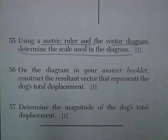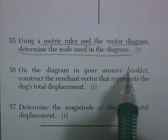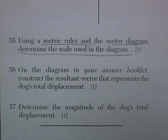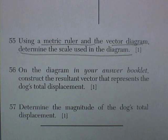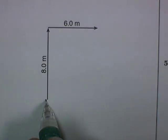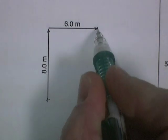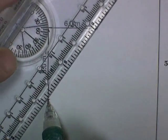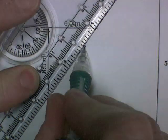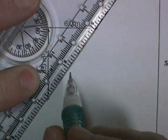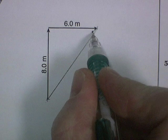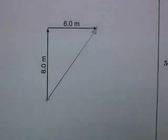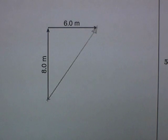Question 56. On the diagram in your answer booklet, construct the resultant vector that represents the dog's total displacement for one point. So the dog starts here, ends up over there. So a vector representing that will start here and end here. Don't forget to put an arrow. Vectors have arrows on them. That's the dog's total displacement for one point.